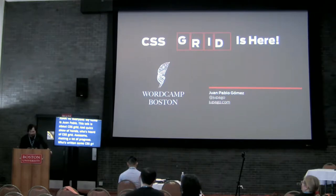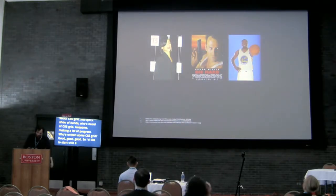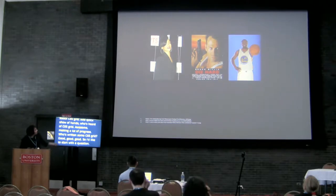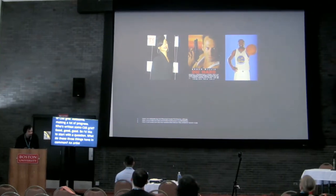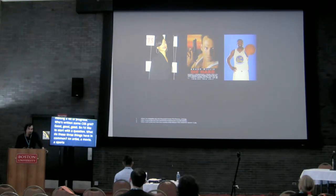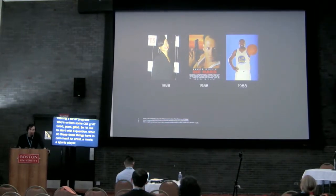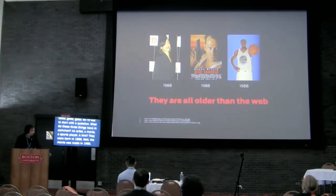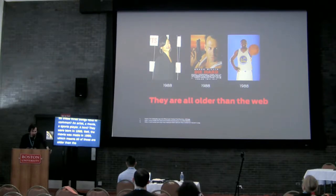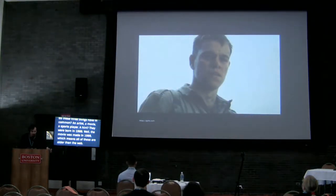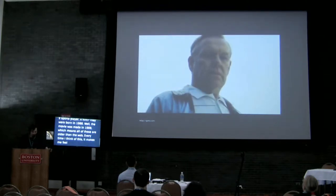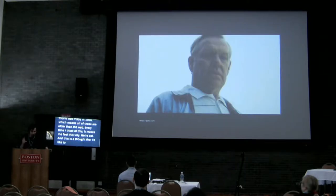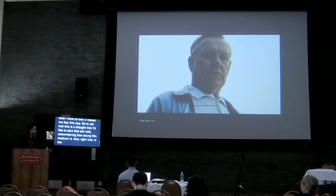I'd like to start with a question. What do these three things have in common? An artist, a movie, a sports player. A hint — they were born in 1988. Well, the movie was made in 1988, which means all of these are older than the web. Every time I think of this, it makes me feel this way. We're old. I'd like to start this talk remembering how young this medium is, and that right now is the perfect time to jump in and learn about CSS Grid.